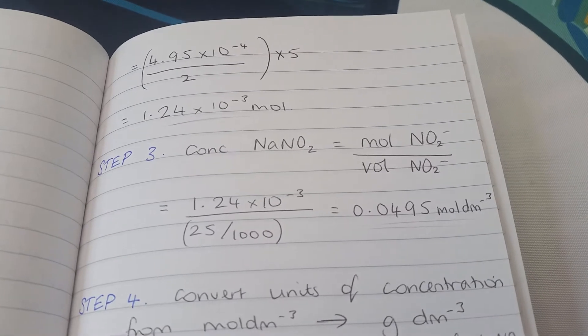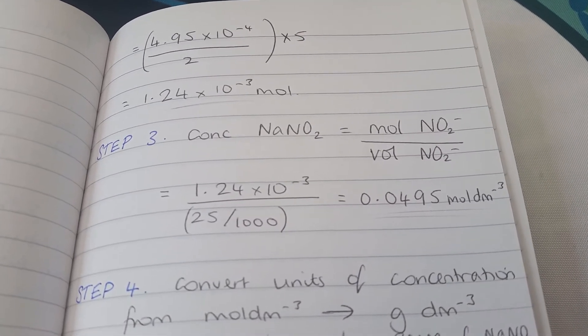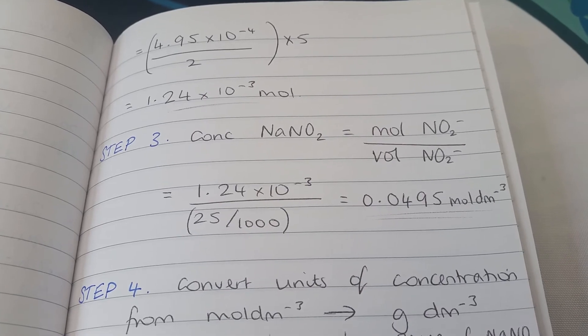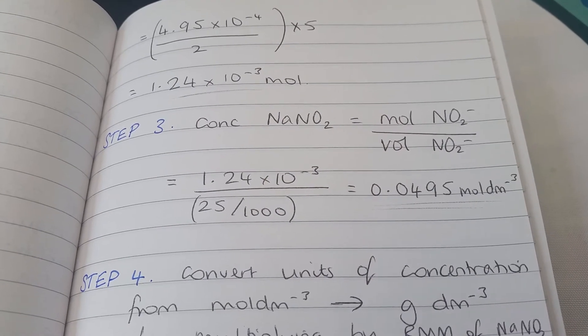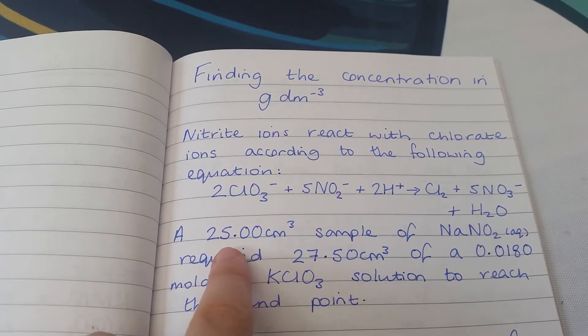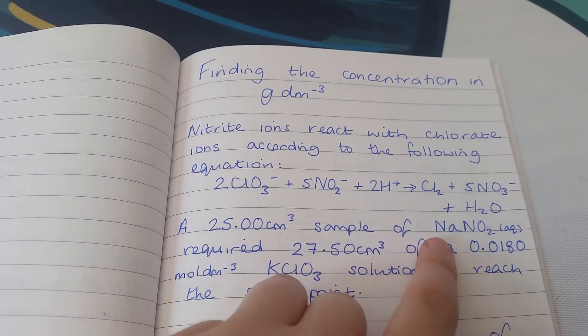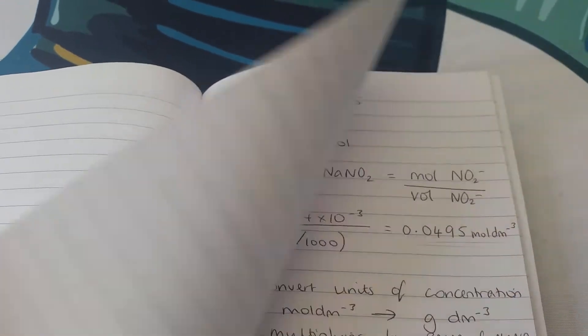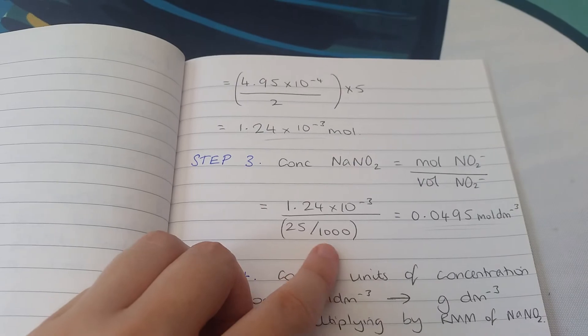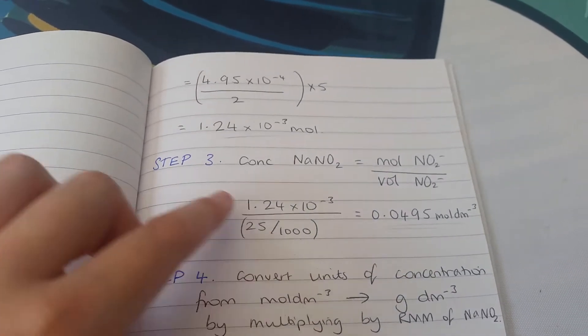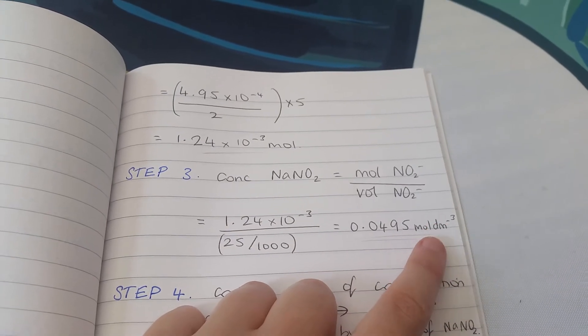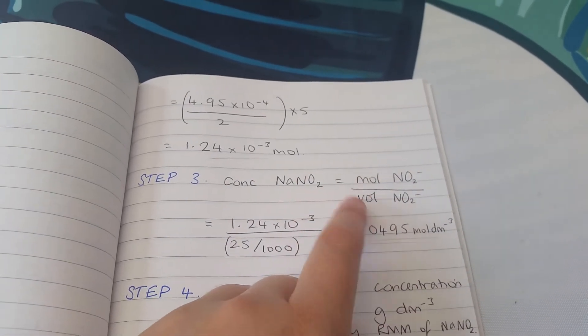Now we have moles of sodium nitrite. We can calculate concentration by dividing our moles by the volume. From the question, we have 25 cm³ of sodium nitrite, which we divide by 1000 to convert to dm³. Moles over volume gives us concentration in mol/dm³.